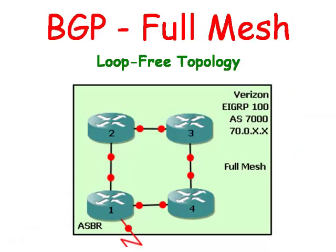As we learned from previous videos, BGP is a path vector protocol, which is designed to span numerous autonomous systems. BGP was designed to be simple, which is why it lacks the ability to prevent routing loops within its own system. BGP is designed in such a way that the network administrators will prevent routing loops by creating a logical full mesh between all the BGP routers within that system.